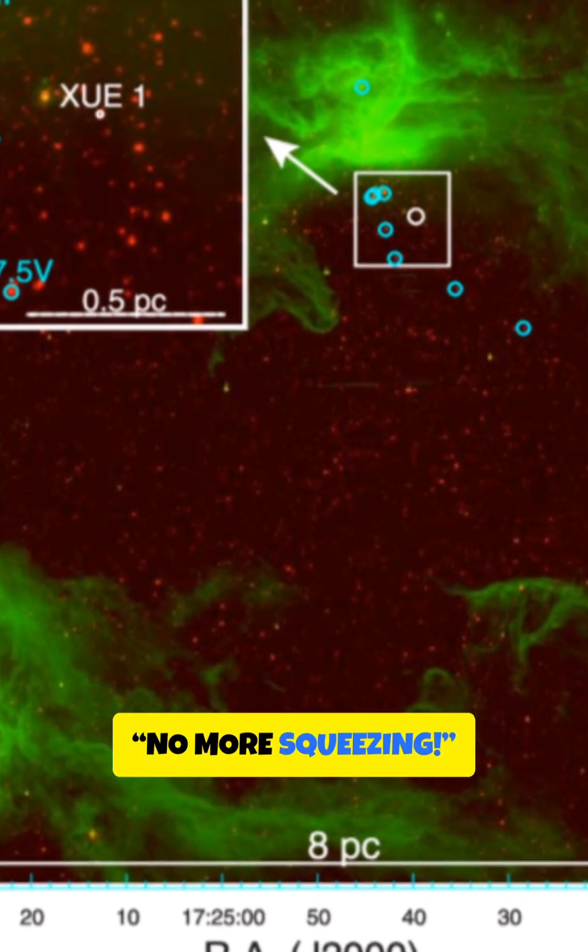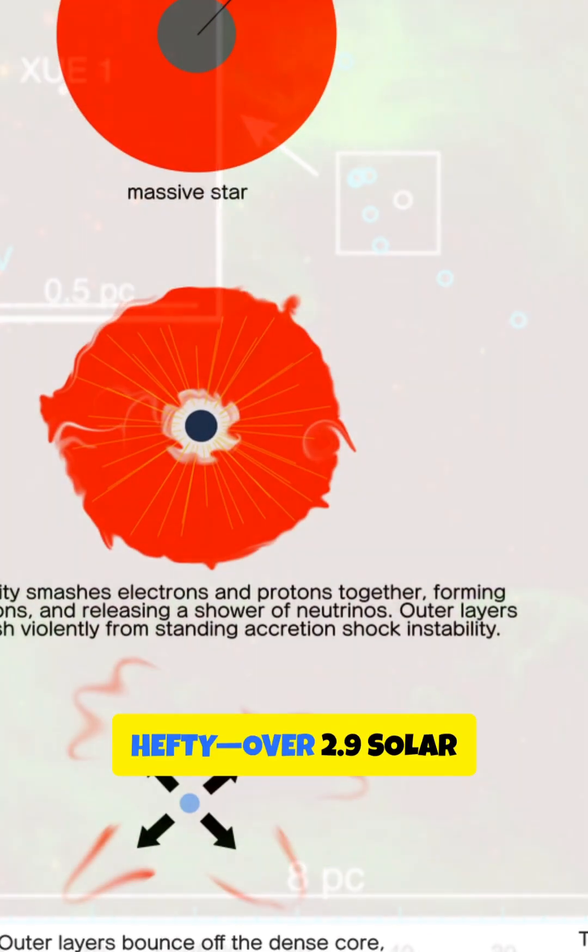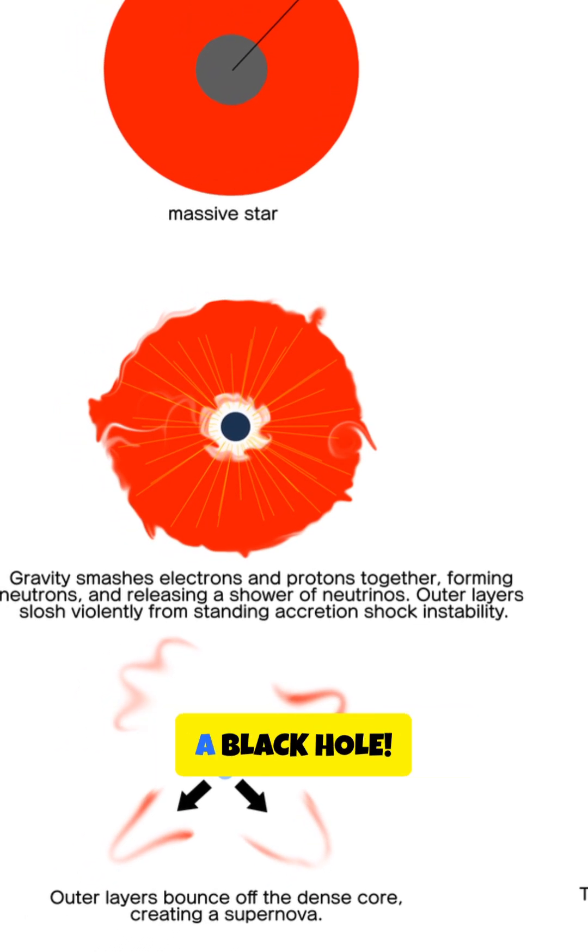Imagine a cosmic no-more-squeezing rule set by quantum physics. But if a neutron star gets too hefty, over 2.9 solar masses, it breaks that rule and goes boom, turning into a black hole.